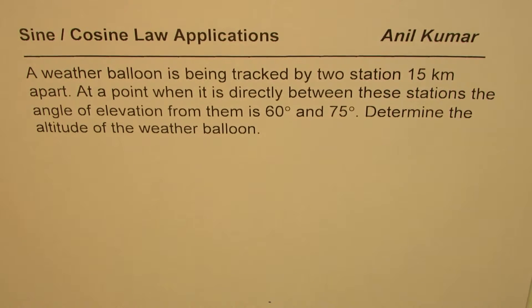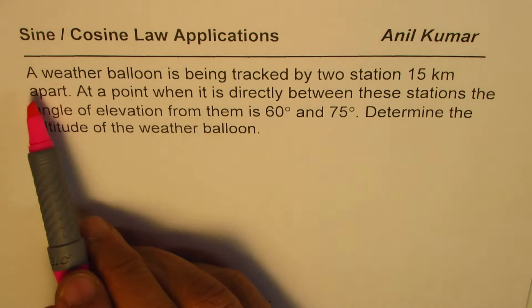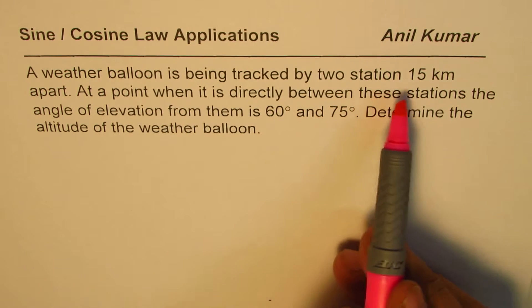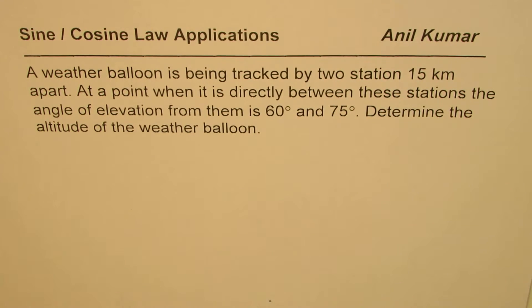I'm Anil Kumar. We are taking a few questions based on sine and cosine law. Here the question is: a weather balloon is being tracked by two stations 15 kilometers apart. At a point when it is directly between these stations, the angle of elevation from them is 60 degrees and 75 degrees.